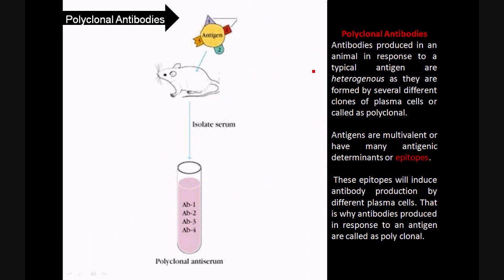Now, moving into more detail — what are polyclonal antibodies? Suppose this is an antigen with 4 epitopes. We have injected this antigen into an animal system and are isolating the serum. On analysis, we find that a number of antibodies are produced, since this particular antigen has more than one epitope, resulting in multiple antibodies. Antibodies produced in an animal in response to a typical antigen are heterogeneous, as they are formed by several clones of plasma cells, and are therefore called polyclonal. The reason is that antigens are multivalent — an antigen has many epitopes, and each epitope can initiate a B cell to produce different antibodies with different specificities. We will therefore get a mixture of antibodies, often referred to as polyclonal antibodies, that arise from different B cells or plasma cells.